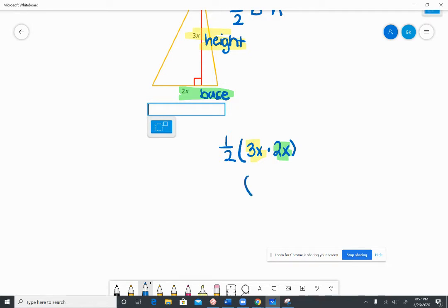So we do what's in our parentheses first. 3x times 2x is going to be 6x squared. And that's because 3 times 2 is 6, and then there are imaginary 1s.